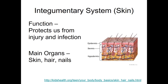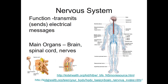The integumentary system is also for protection. It protects you from injury — if you bump into something, your skin gets injured rather than your vital organs. It also protects you from infection if you're exposed to bacteria. It's made up of your skin, hair, and nails. Sweat glands help you get rid of waste like salt and also cool your body down. Your hair helps keep you warm while the evaporation of sweat keeps you cool.